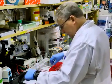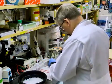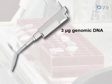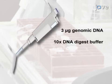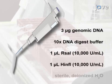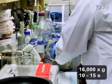The genomic DNA samples to be analyzed were extracted from cells using a commercial DNA extraction kit as described in the text protocol. Perform the digestion of the genomic DNA in a final volume of 20 to 40 microliters. Combine the following in each microcentrifuge tube: 3 micrograms of genomic DNA, 10x DNA digest buffer, 1 microliter of RSA1 restriction enzyme, 1 microliter of HIN F1 restriction enzyme, and sterile deionized water to the final volume.